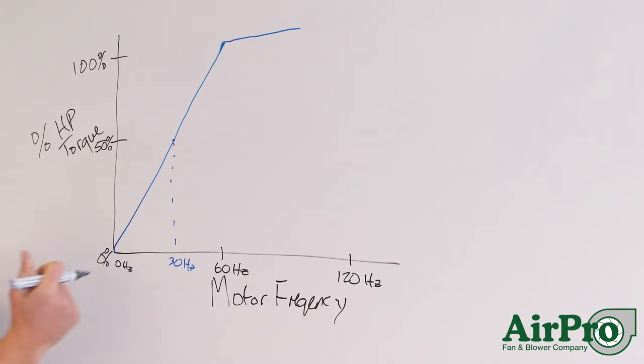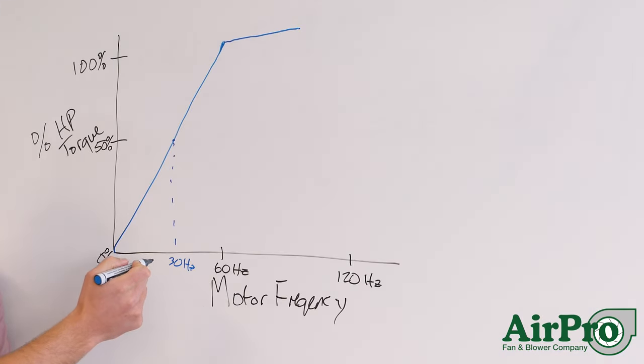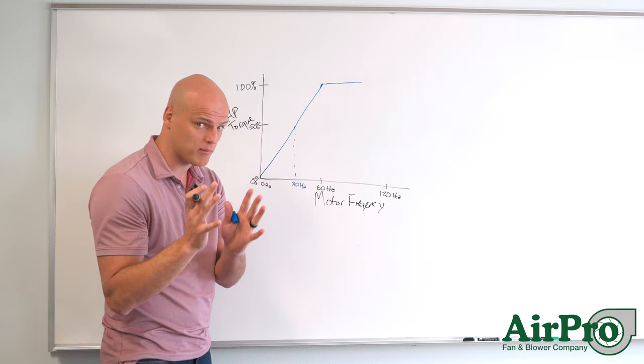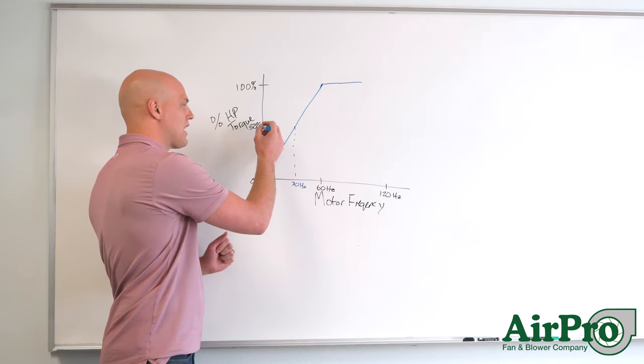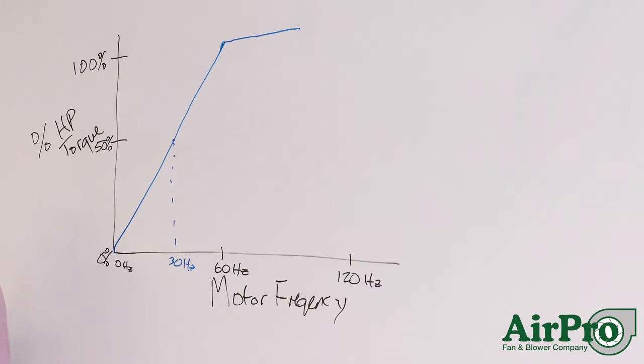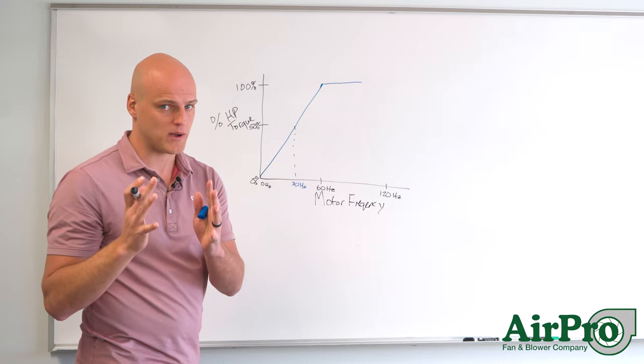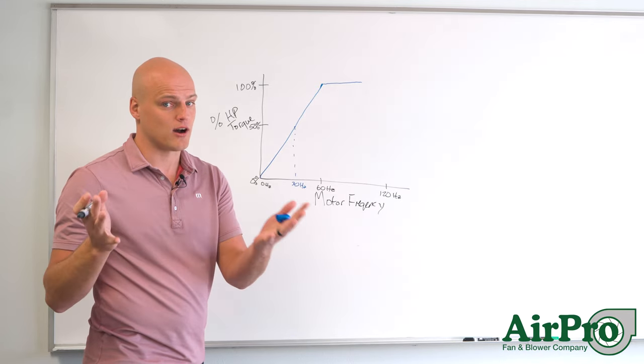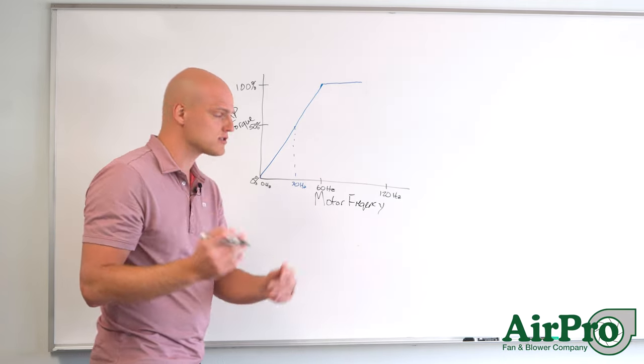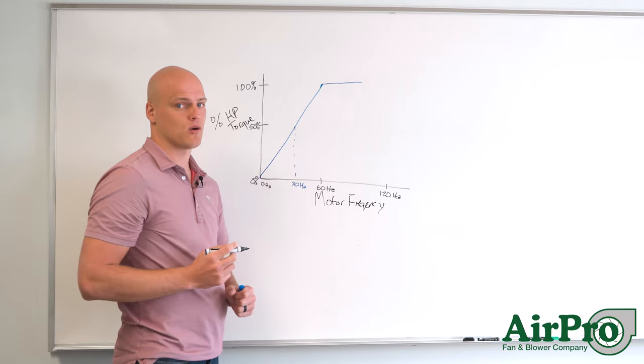But you now reduce that to 30 hertz so you're running approximately 900 rpm. You only have 50 percent of the available horsepower. Which means on a 100 horsepower motor at 30 hertz you would have 50 horsepower available.